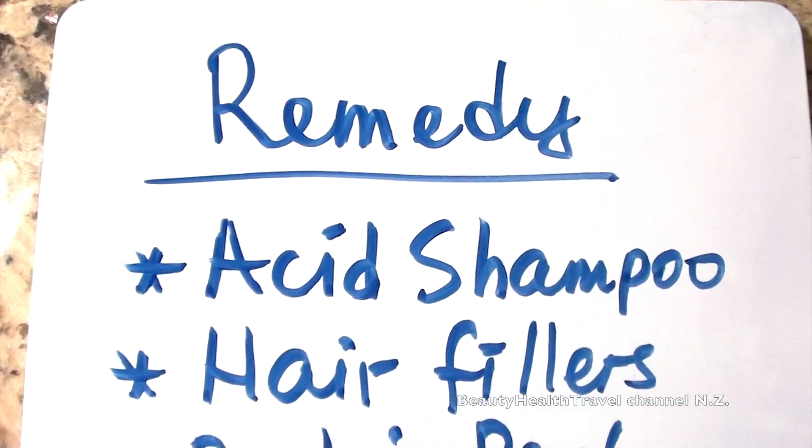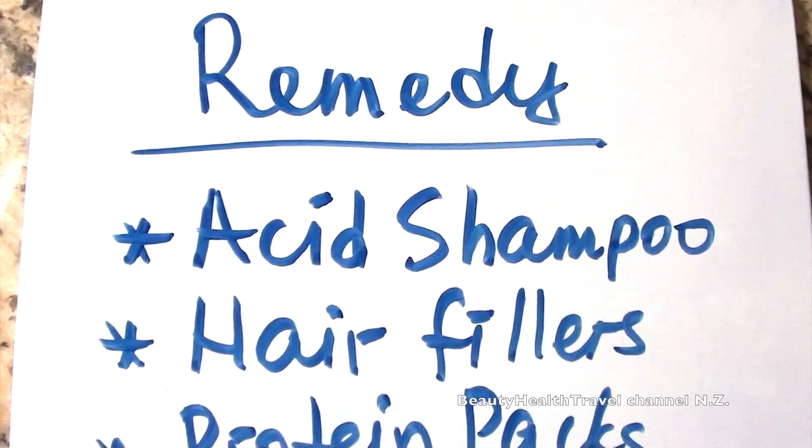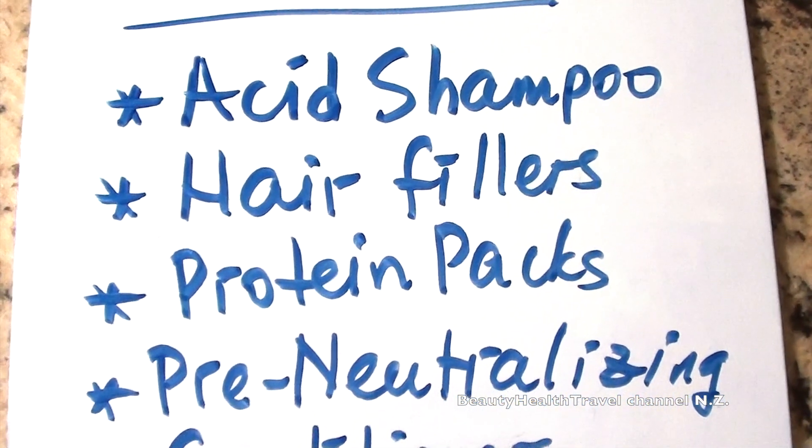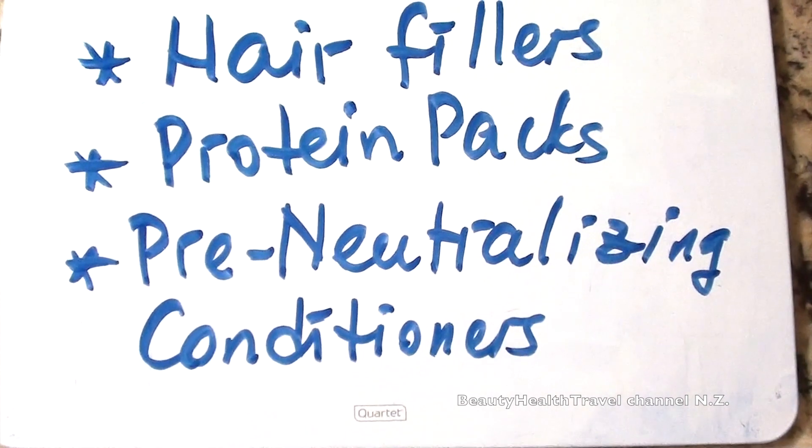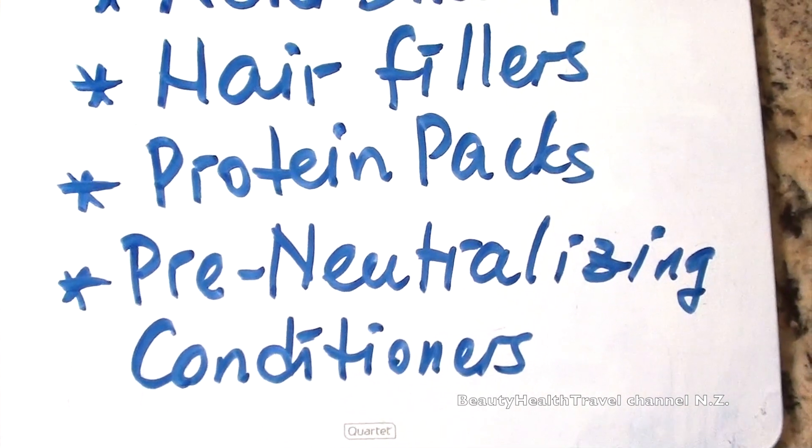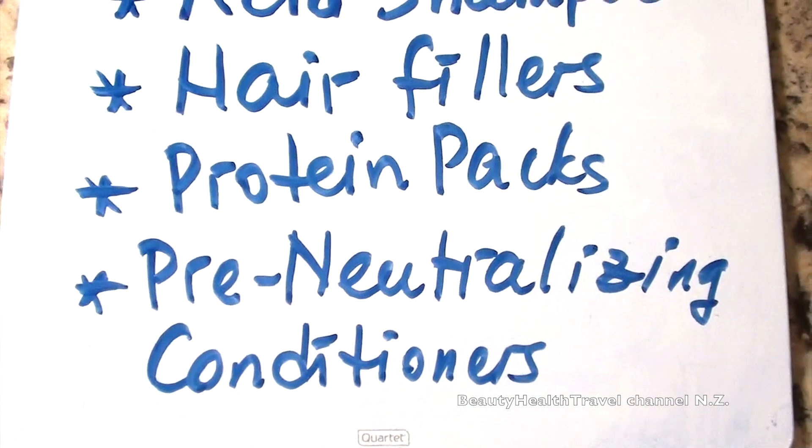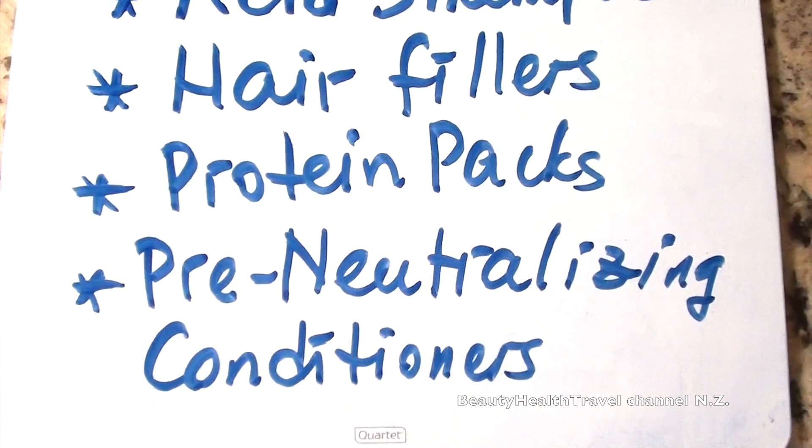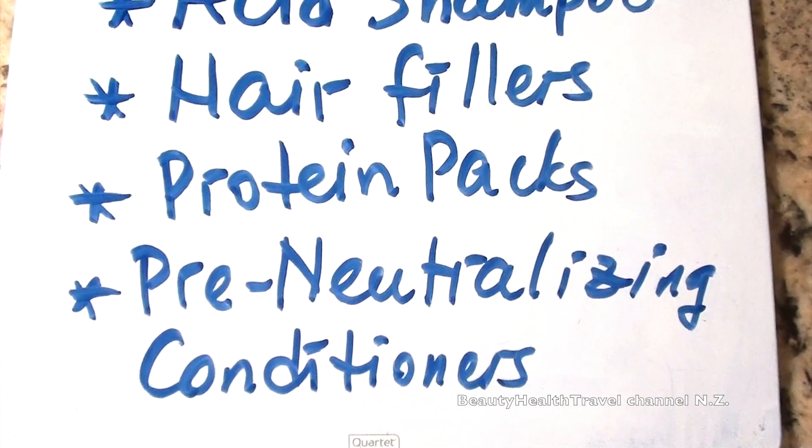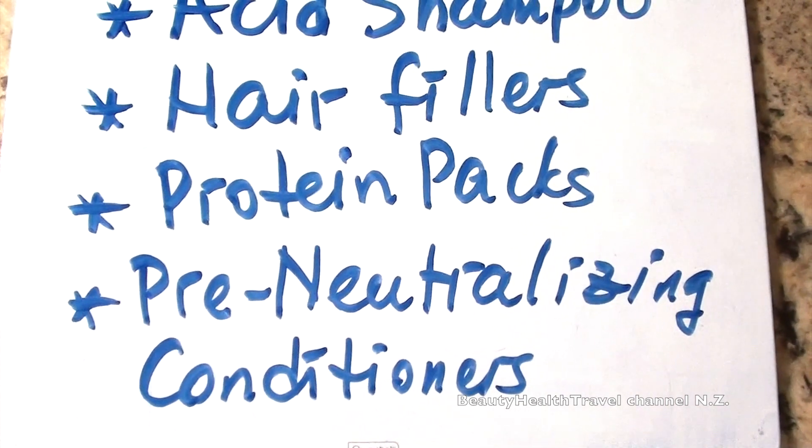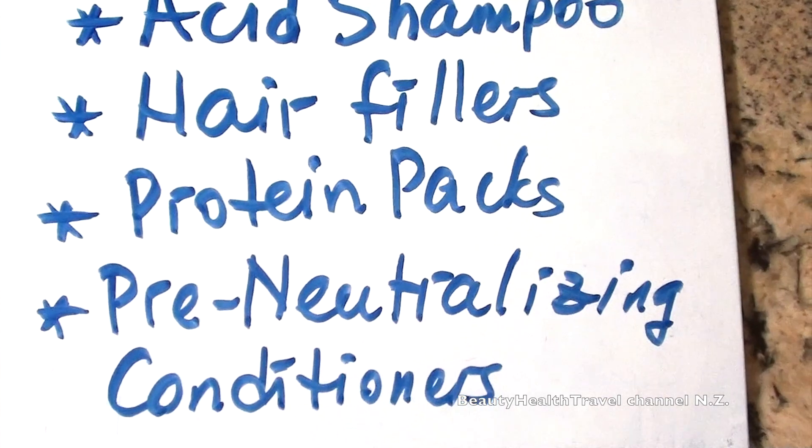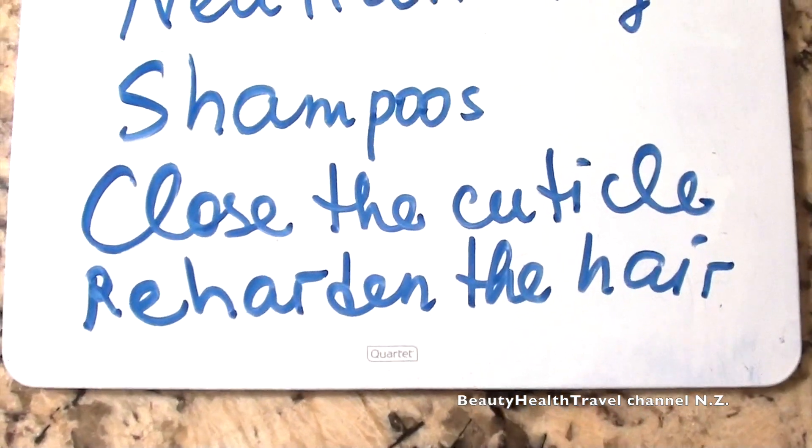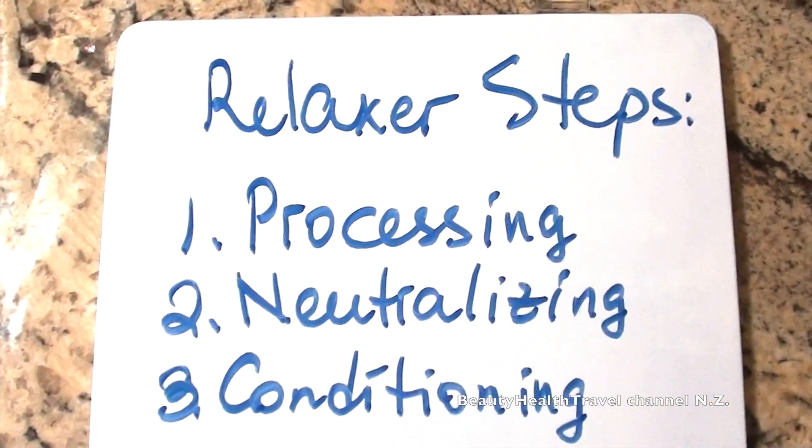So to remedy, somewhat remedy, you cannot completely bring the hair back. You could use acid shampoo, hair fillers, protein packs are really good. Pre-neutralizing conditioners are the ones that when you open up the hair and you have the cuticle open and you already processed the hair, you can rinse it, pre-neutralize the hair with the conditioner, like force the conditioner into the hair. So the neutralizers and neutralizing shampoos close the cuticle and re-harden the hair.